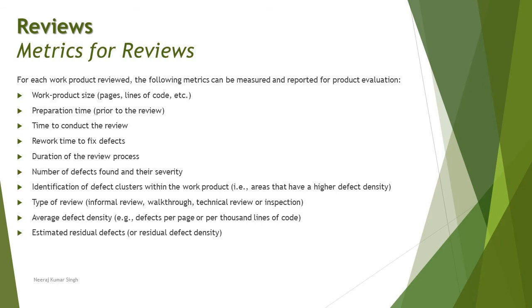Average defect density — defects per page or per thousand lines of code — is also measurable. Rather than just finding defects, we try to improve the previous activity by asking developers to write more efficient code. Estimated residual defects: for example, if we found 30 to 40 defects during review, we estimate that at least 10 percent may still be found during dynamic testing.